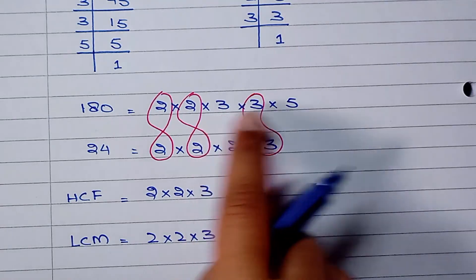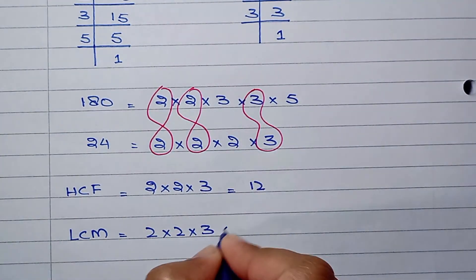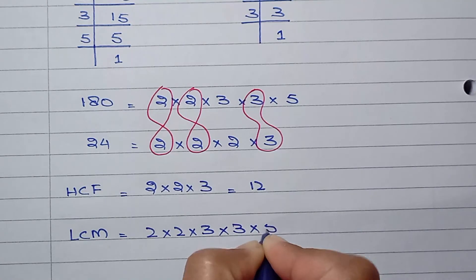Basically there are 3, 5, and 2. These are the remaining factors. So times 3 times 5 times 2.